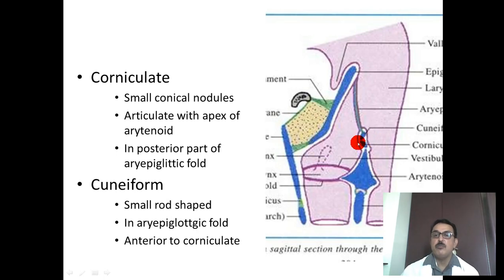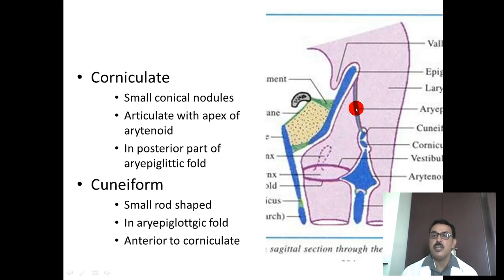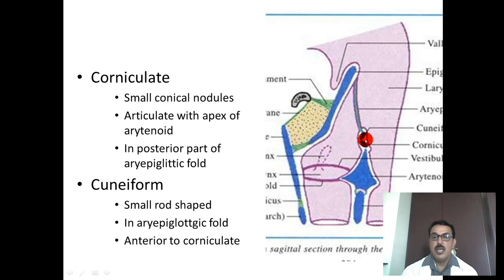The corniculate cartilage is a small conical nodule that articulates with the apex of the arytenoid cartilage. It is located inside the aryepiglottic fold. The cuneiform is a small rod-shaped cartilage also located inside the aryepiglottic fold, and it articulates with the corniculate cartilage.